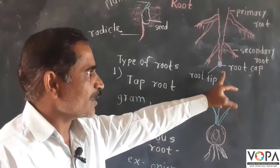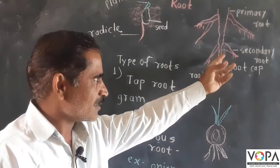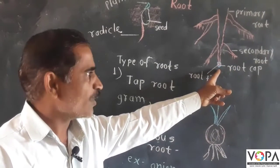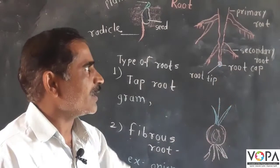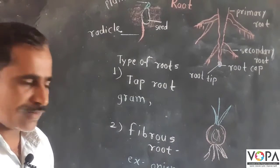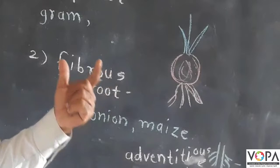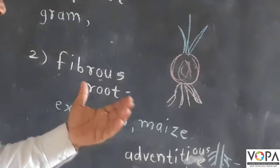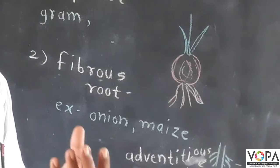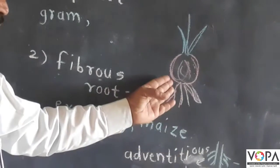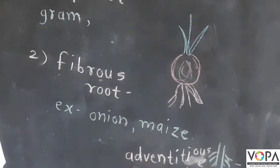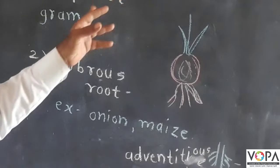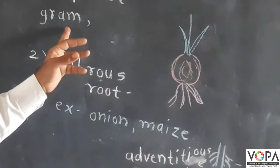The second type of root is the fibrous root. Fibrous root means the roots which are fiber-like roots that arise from the stem of the plant. Example is onion, and the first type of root is tap root, example is gram.